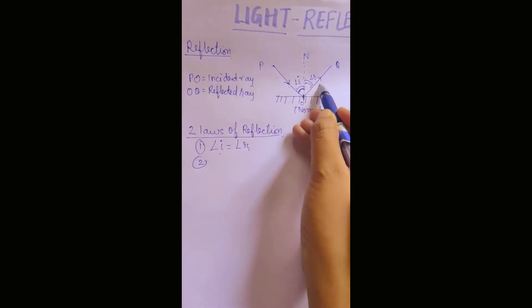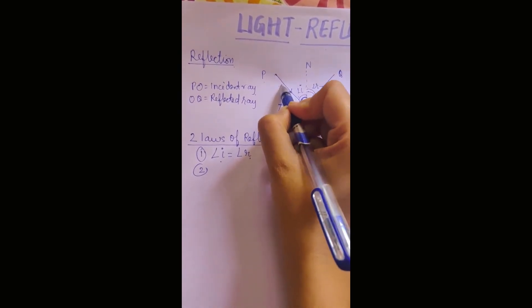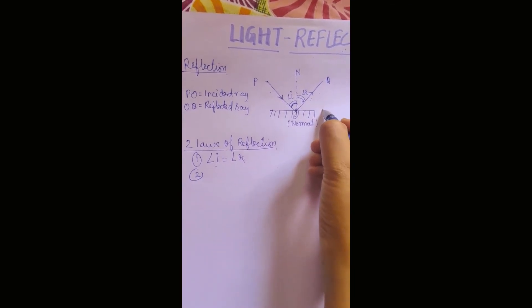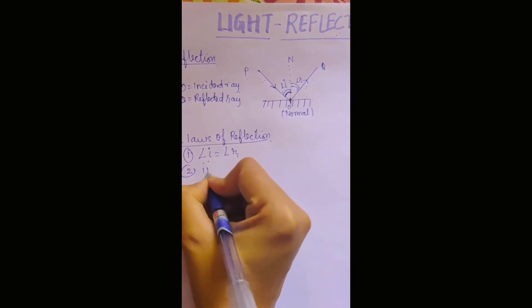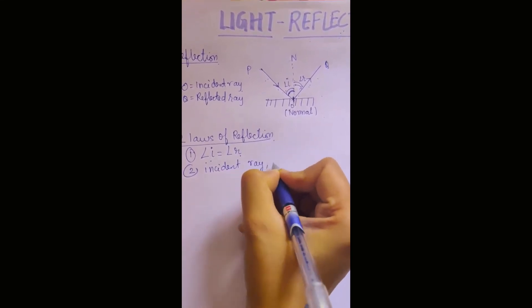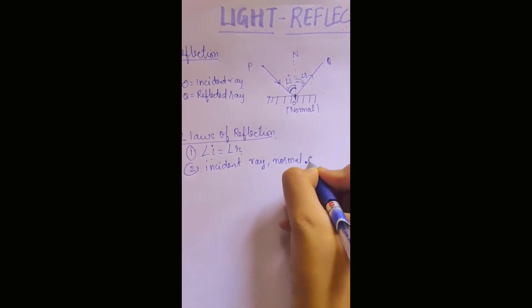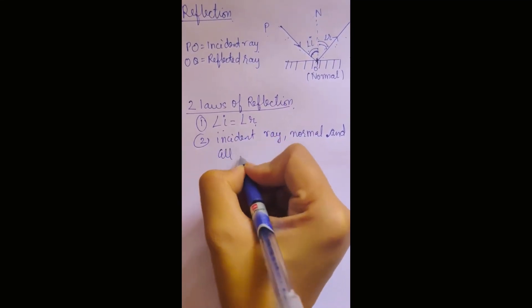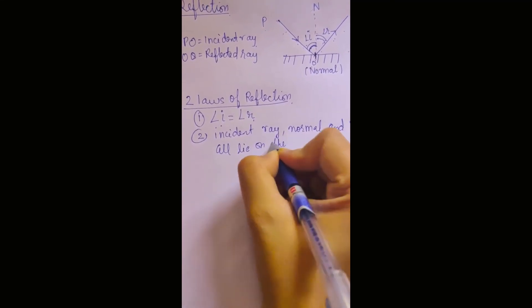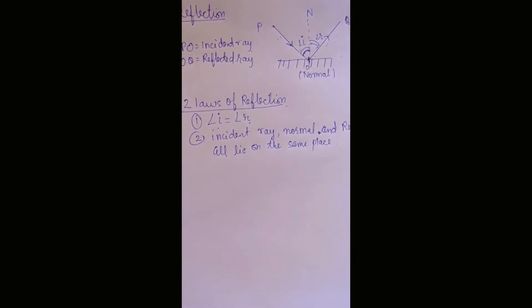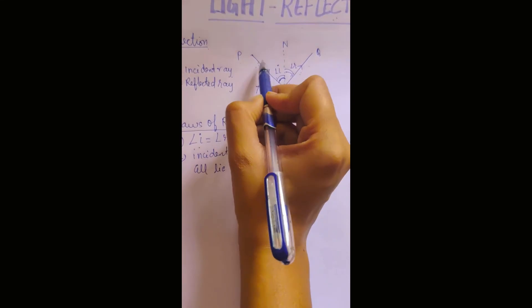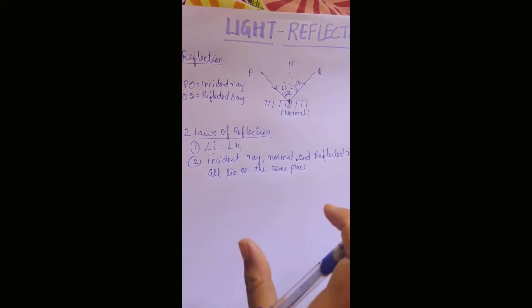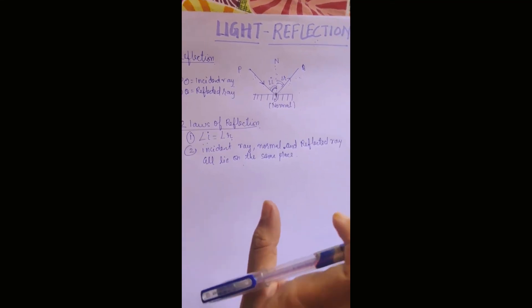Moving on to the second law of reflection: the incident ray, the reflected ray, and the normal all lie in the same plane. So incident ray, normal, and reflected ray — all three will always lie on the same plane. These are the two laws of reflection, and this was the basic introduction to the chapter that you have already learned in lower classes.